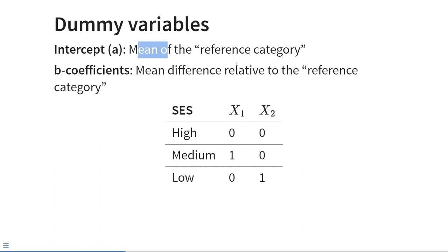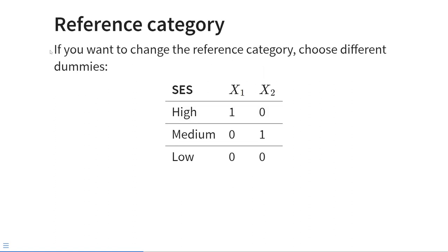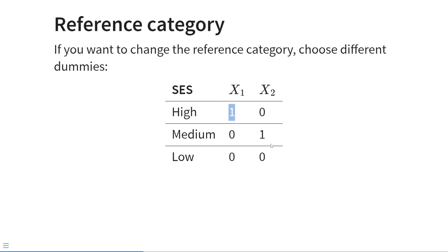The intercept a tells us the mean value of the reference category, and the b coefficients tell us the mean difference relative to that reference category for the group whose membership is encoded by that specific dummy. Of course, you can pick your own reference category. If you want to compare people to the low SES category, just create two dummies — one coding for high SES membership and one for medium SES — and everybody scoring 0 on both will be in the low SES group.